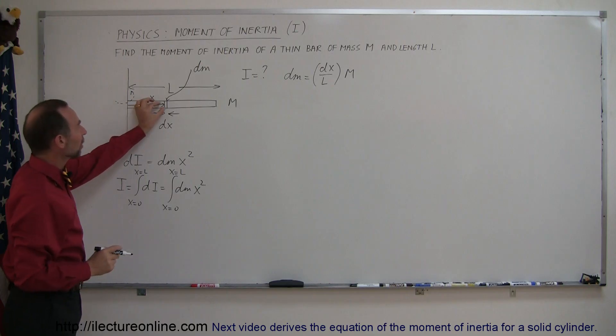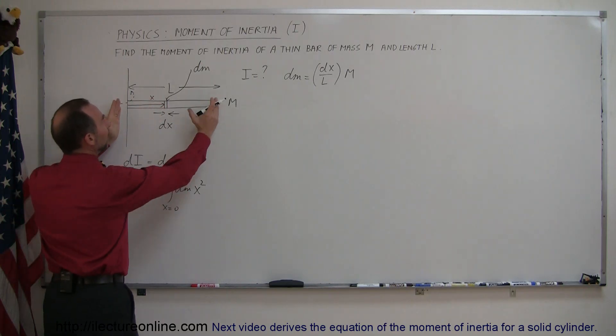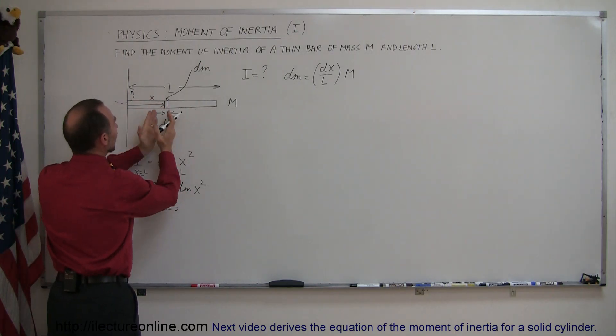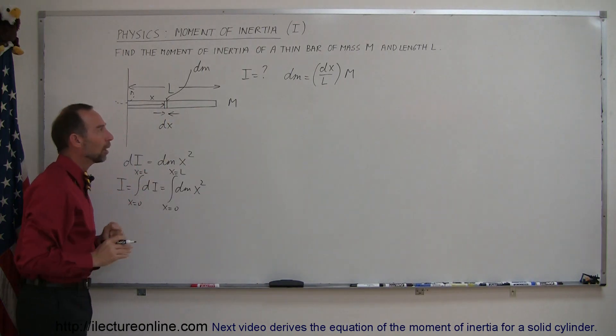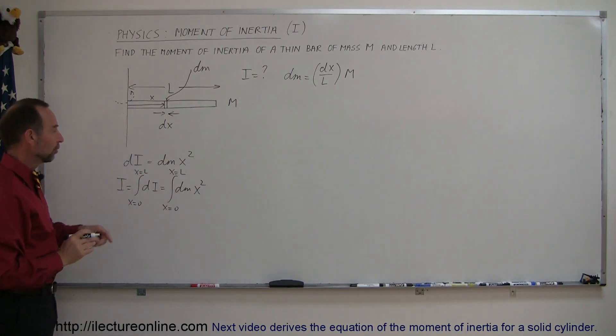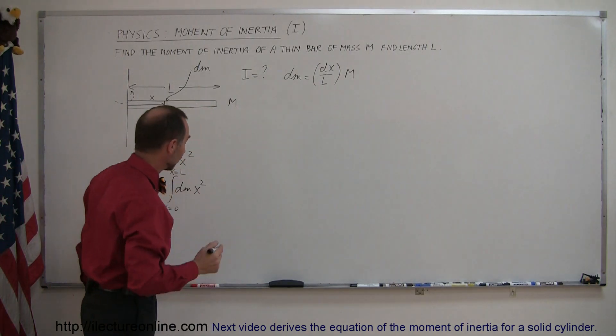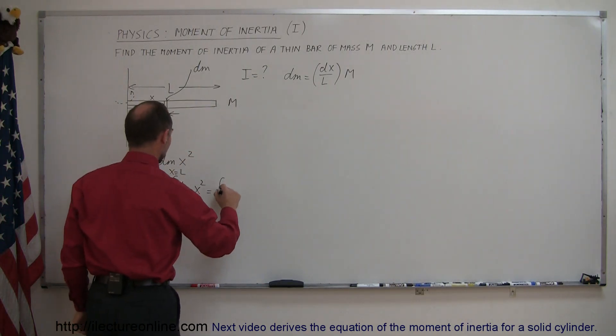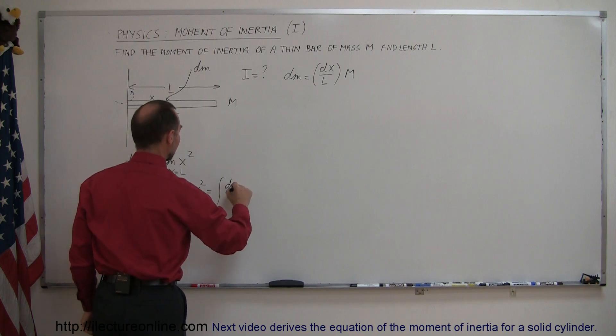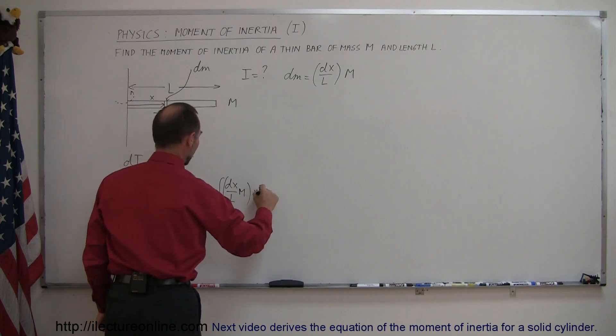So, the mass of this small little piece is equal to the whole mass, m, times the ratio of the length of the little piece divided by the length of the whole bar. So, that would be dx over l. So, I can replace my dm by dx over l times m. So, let's do that. So, this is equal to the integral of dx over l times m, that was my old dm, times x squared, again from x equals 0 to x equals l.